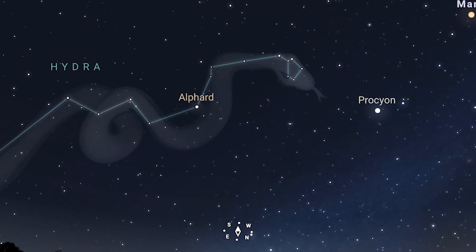Or you can download an app to your phone, and the best one, in my opinion, is Stellarium. You can also try SkySafari, and there are many others. You just hold your phone up to the sky, and it'll have the names of some stars, and you can make it also show the constellations.